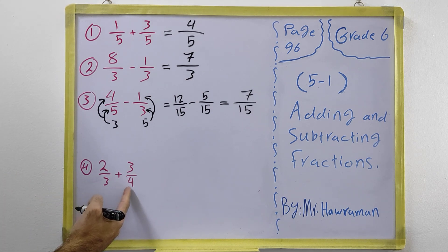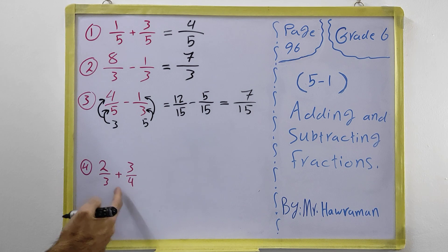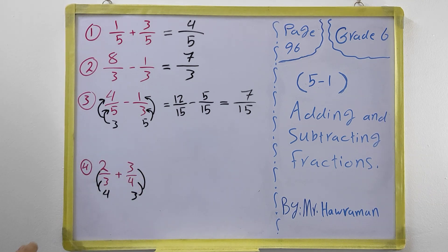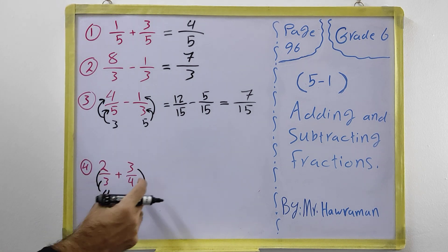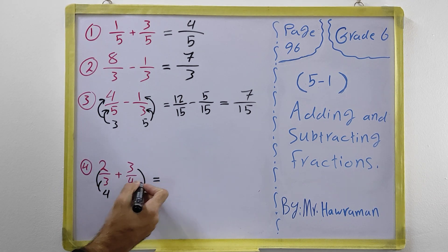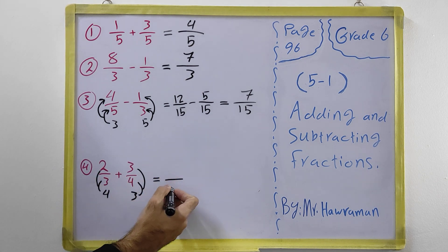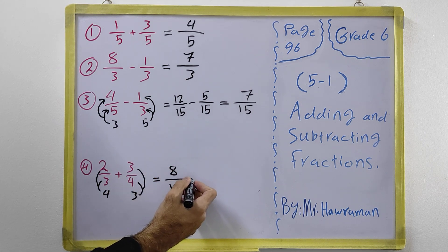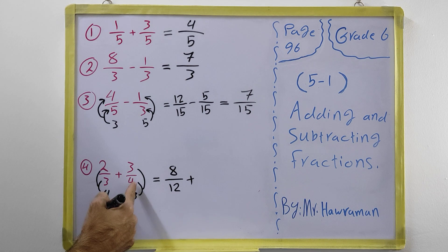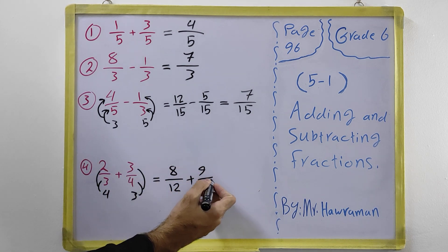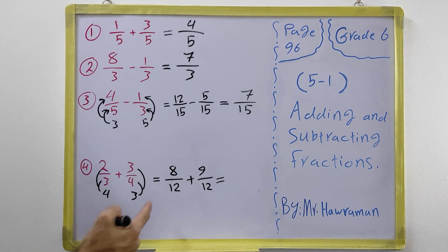For the next example, we multiply each fraction by the denominator of the other. This fraction has denominator 3 and the other has denominator 4, so we multiply by 4 and by 3. That gives us: 4 times 2 equals 8 and 4 times 3 equals 12 in the denominator; plus 3 times 3 equals 9 and 3 times 4 equals 12 in the denominator.